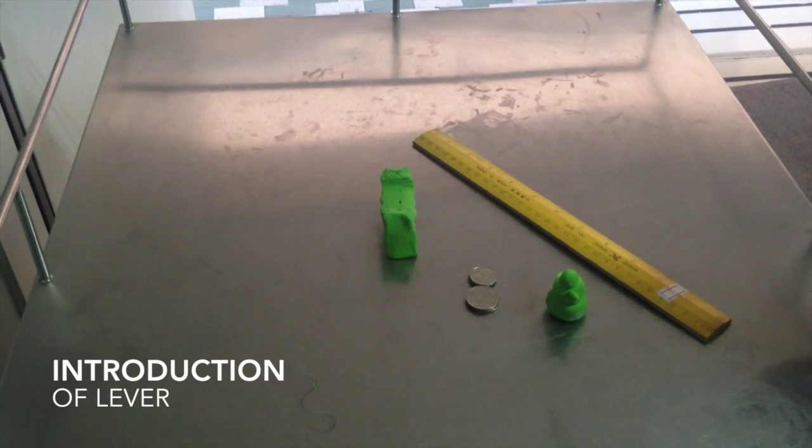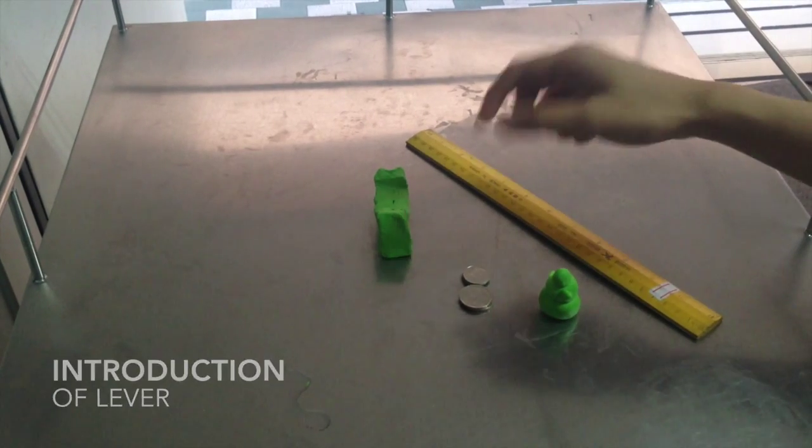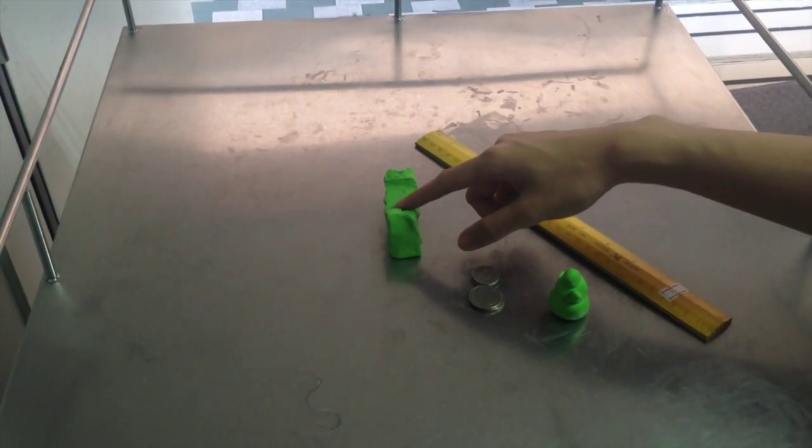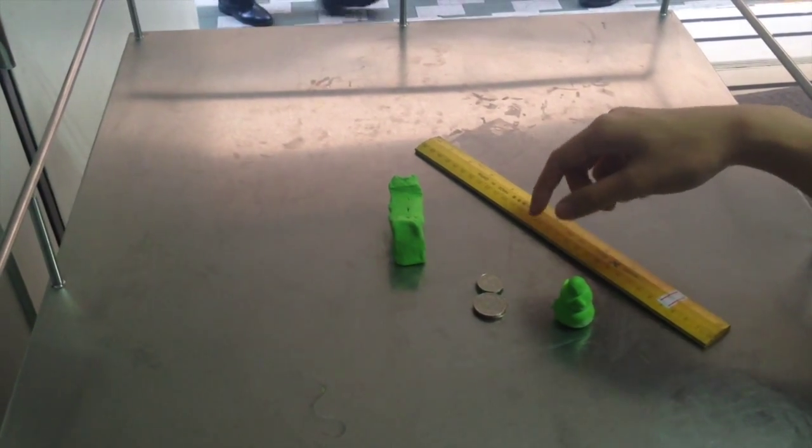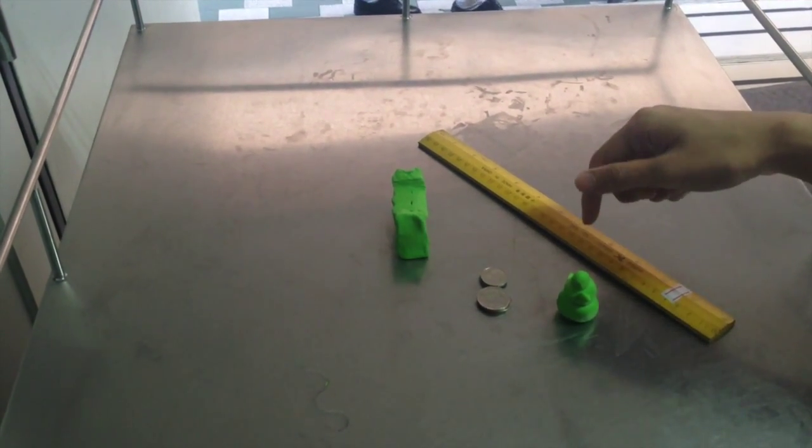Today, our group built pyramids about the lever. The lever must have a fulcrum as we use the clay as a fulcrum, and the ruler as a lever, and the claw and the legs of clay as the weights.